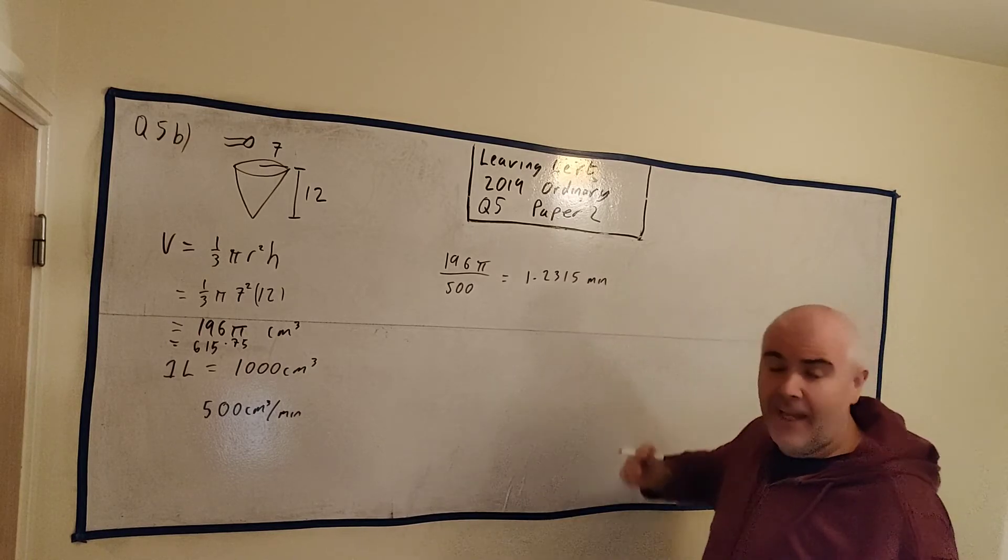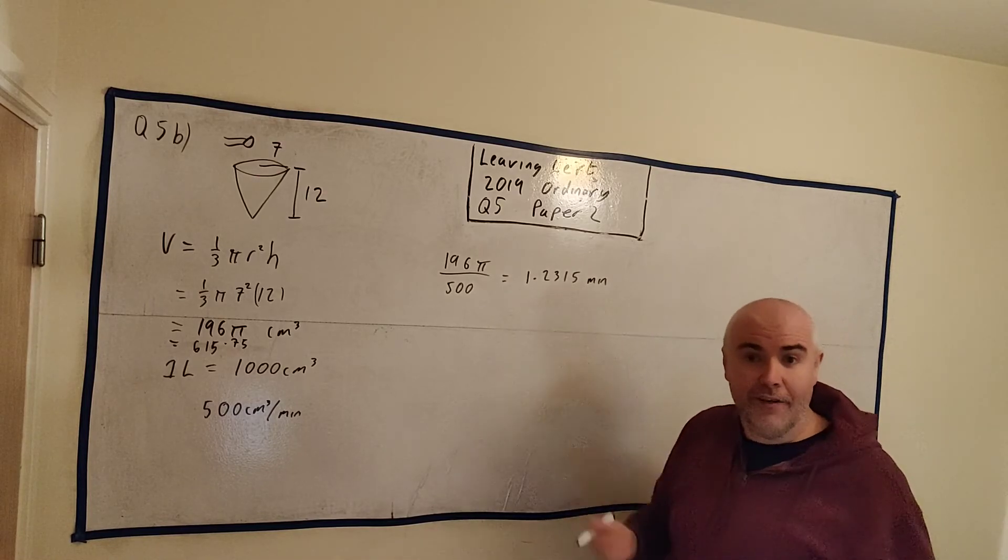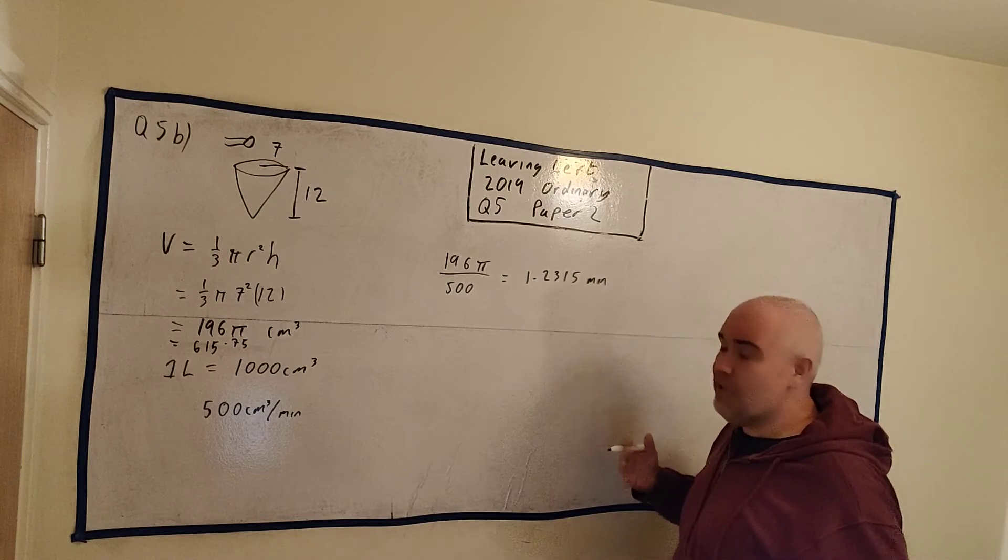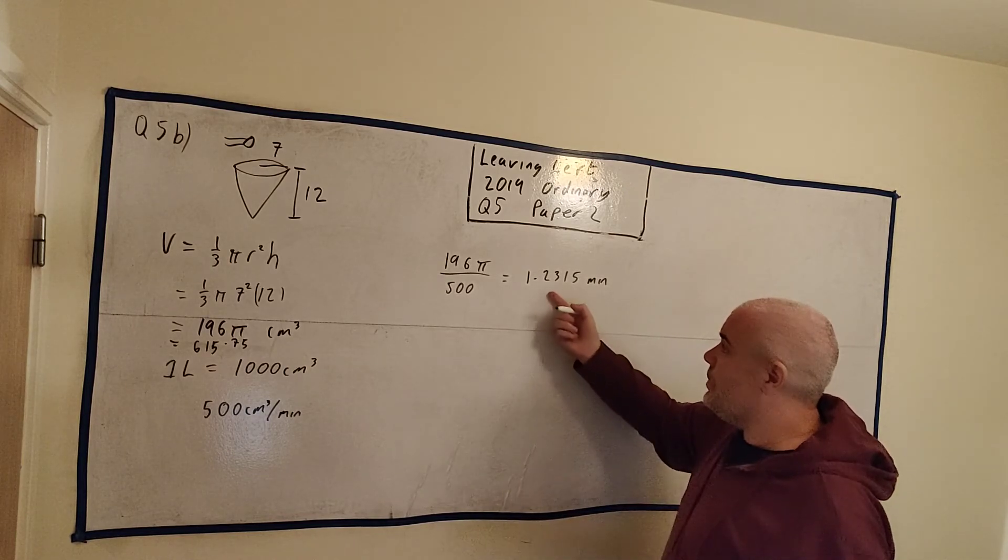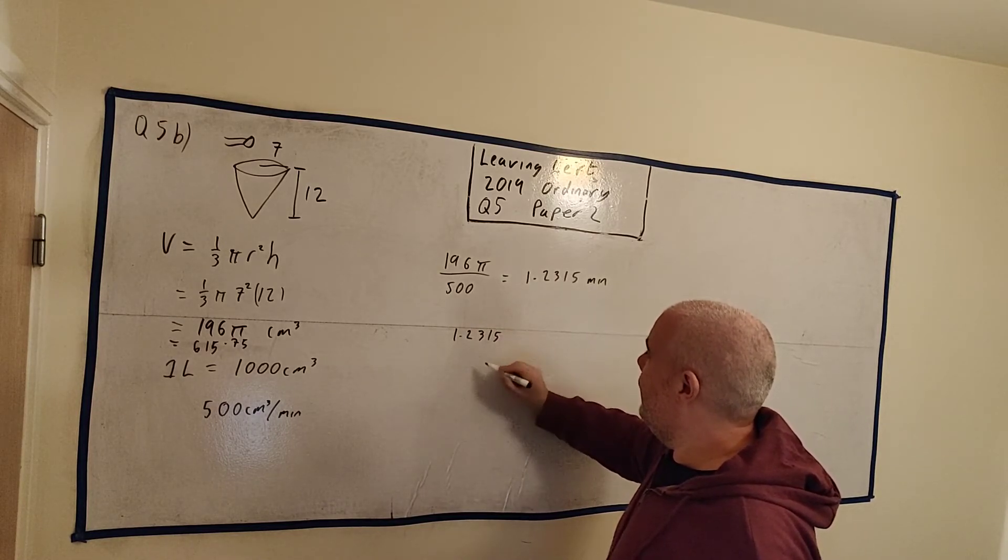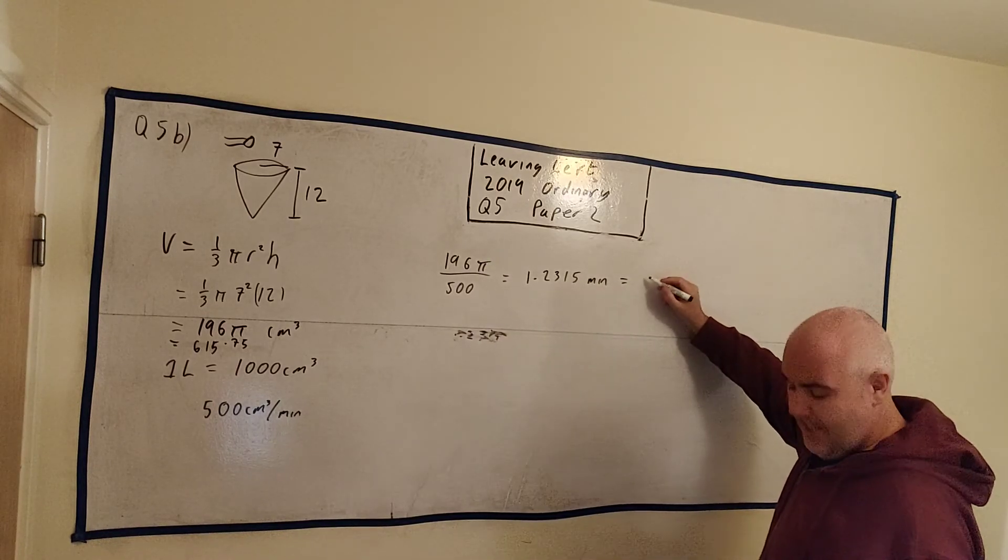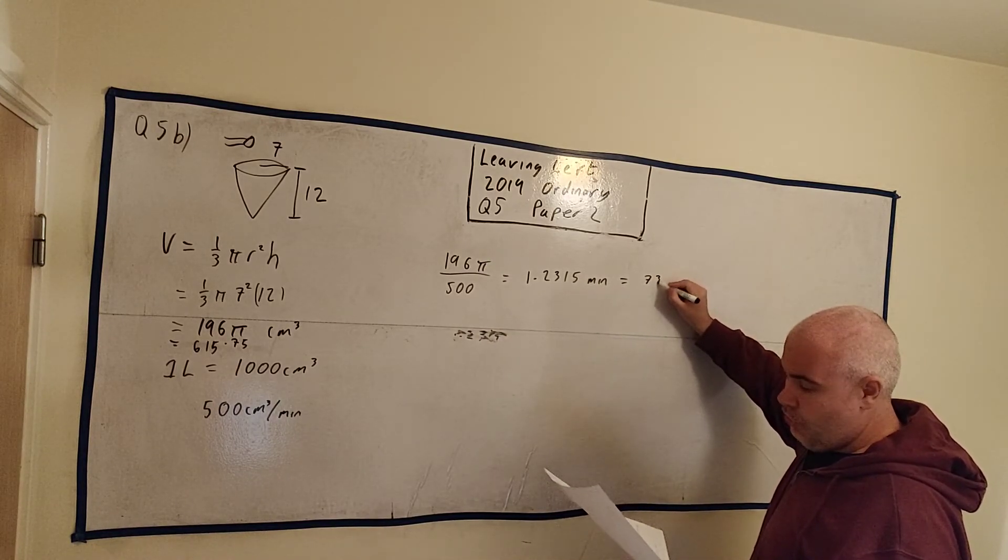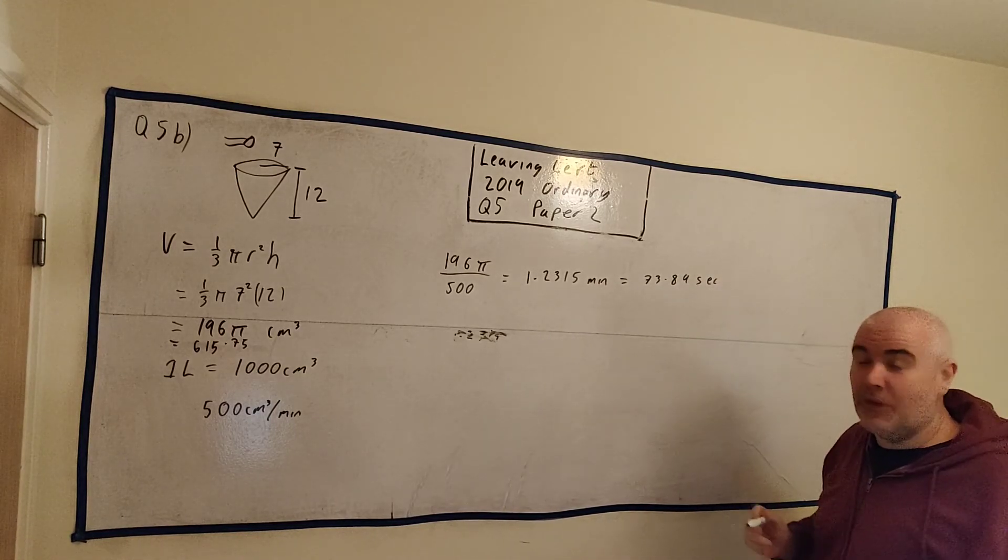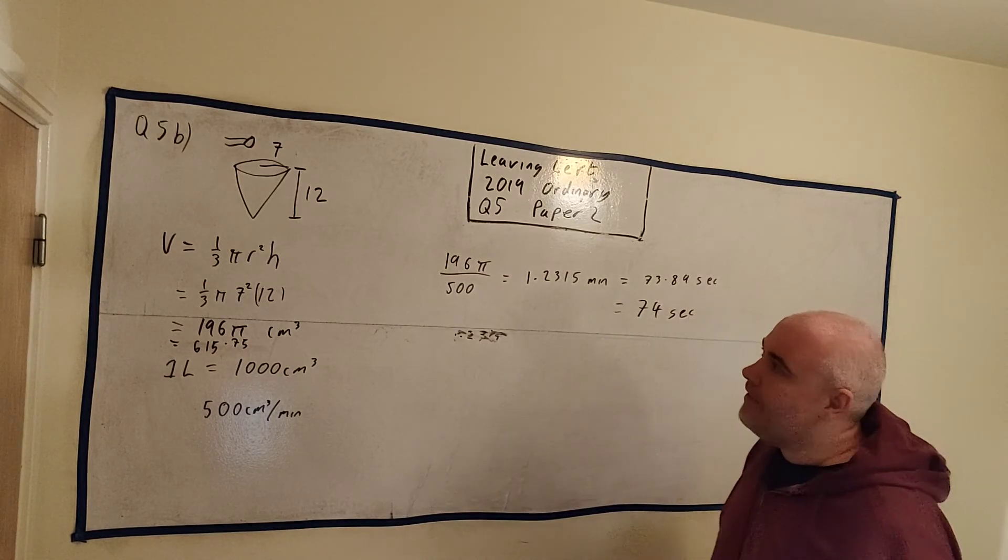But the problem is they ask us seconds. They ask us how many seconds will it take? So really, I need to find out how many seconds is in this. We know there's 60 seconds in a minute. So we simply multiply this number by 60, 1.2315. Well, again, let me just write it here. This is equal, if we multiply this by 60, it is equal to 73.89 seconds. And then we ask us for the nearest seconds. So this is equal to 74. 74 seconds is the answer to that question.